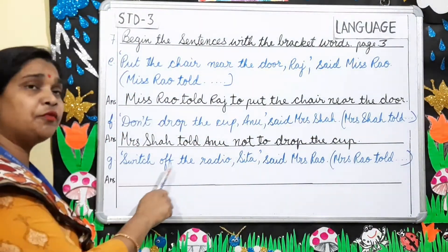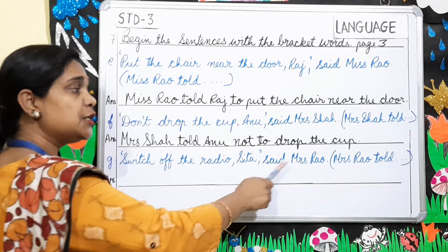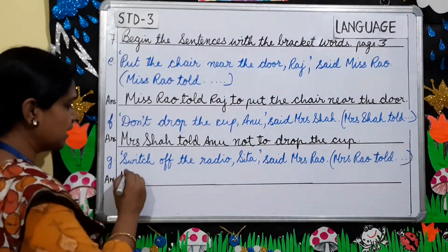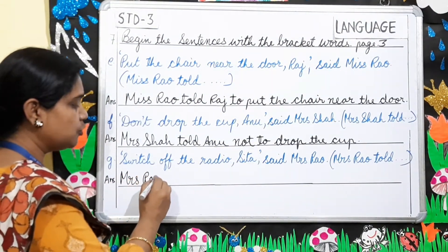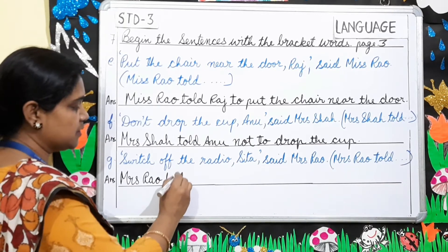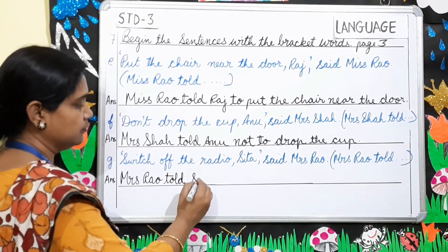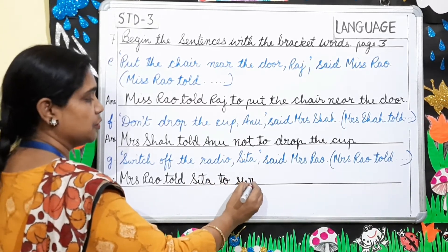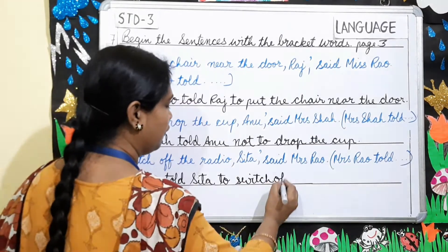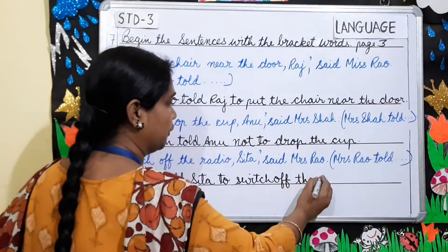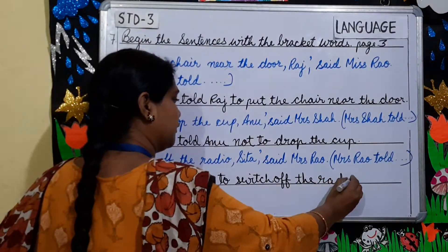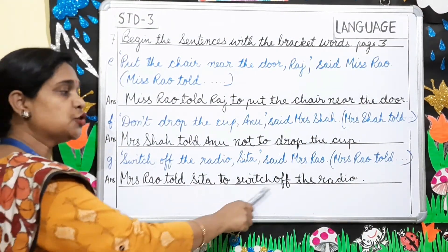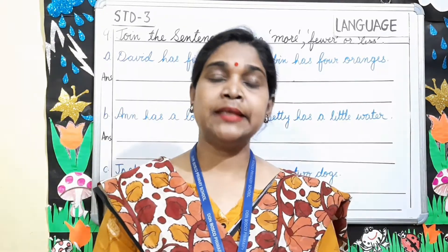Number G: 'Switch off the radio, Sita,' said Mrs. Rao. In the bracket: 'Mrs. Rao told.' Begin your sentence with 'Mrs. Rao told.' Mrs. Rao told Sita to switch off the radio. The answer is: Mrs. Rao told Sita to switch off the radio.